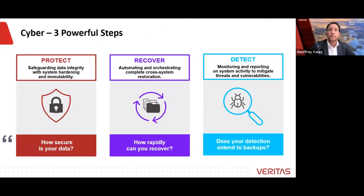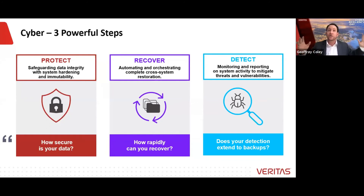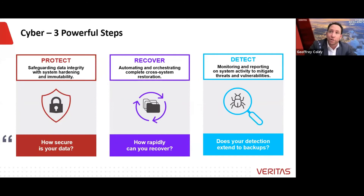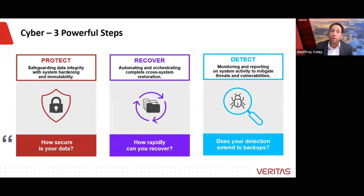Let me simplify the message into three key steps. Your data is everywhere — making sure every bit of it is protected is important. We cover at Veritas everything from the core to the edge to the cloud. Data has to remain immutable — you can't change it in the face of an attack, especially as your last line of defense. A tertiary or cyber vault doesn't aid quick recovery. Having multiple copies of your data is good, but ensure your primary copies remain within a hardened environment that can deliver rapid RTO — don't spend weeks.